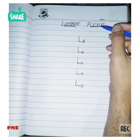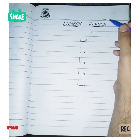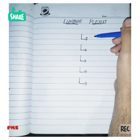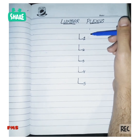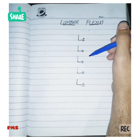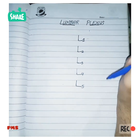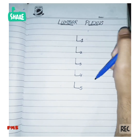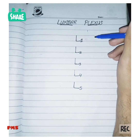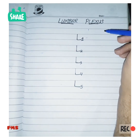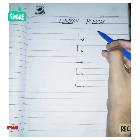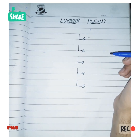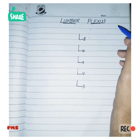The topic of today's interaction is the lumbar plexus. We know there are five lumbar vertebrae, so there are five lumbar spinal segments of the spinal cord from L1 to L5. From L1 to L5, the anterior primary rami divides into two divisions: one is the ventral division and the second is the dorsal or posterior division.